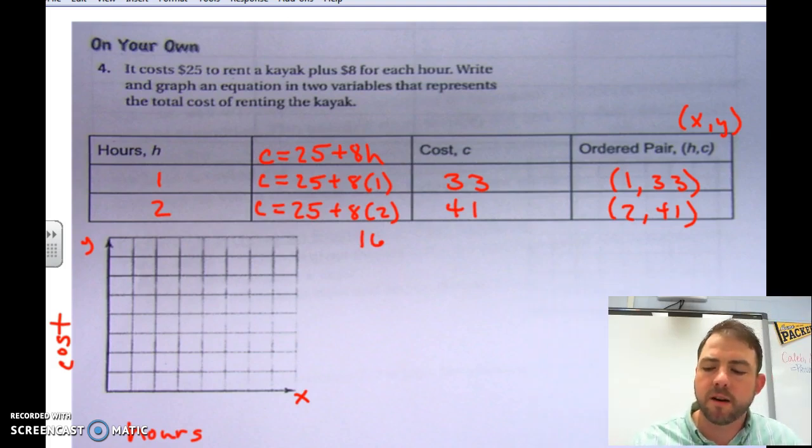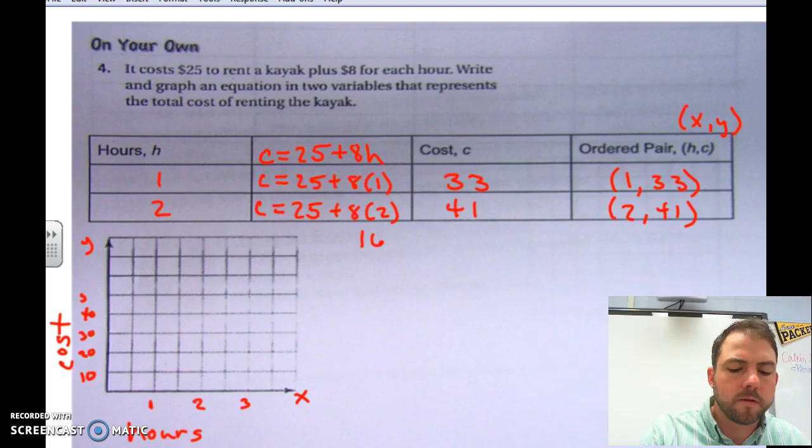So, we need to look at our ordered pairs and see what our scaling should be for our x and y-axis. I think I'm going to go by every half hour for hours. So, 1, 2, and 3. Now, for cost, I think we're going to set our scale at every 10.